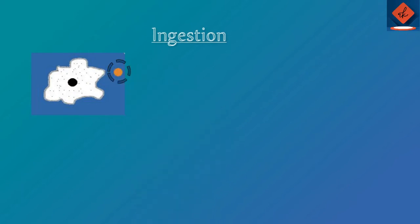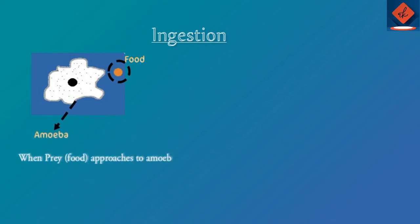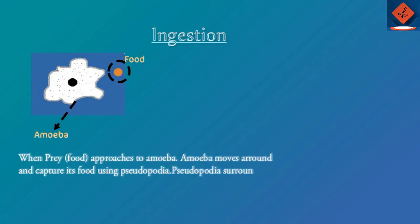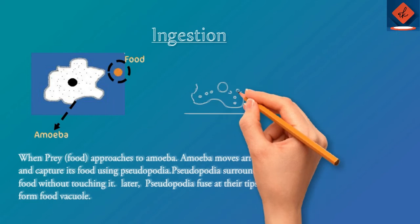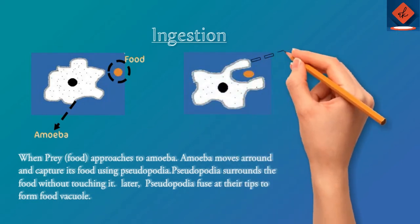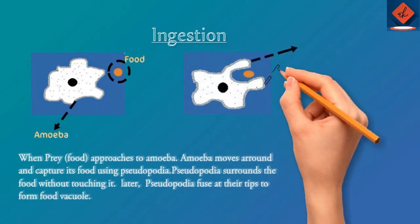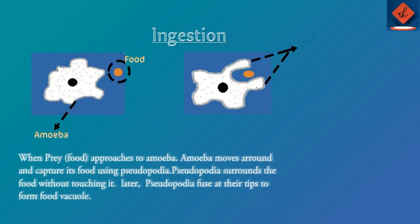When food approaches amoeba, it moves around and captures its food using pseudopodia. The pseudopodia surrounds the food without touching it. Later, the pseudopodia fuse at their tips to form a food vacuole. When the food comes close, amoeba is able to sense it and capture the prey using its pseudopodia.